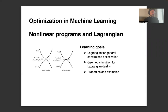Welcome back to the lecture on optimization in machine learning. Today we're going to look at nonlinear programs and the Lagrangian in the general context. The learning goals include Lagrangians for general constraint optimization, geometric intuition for Lagrangian duality, and properties and examples of the Lagrangian for general problems.